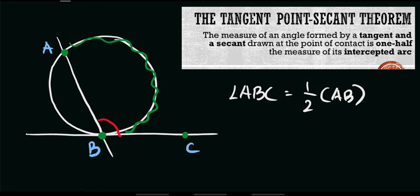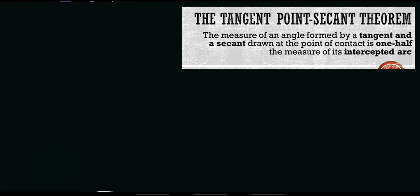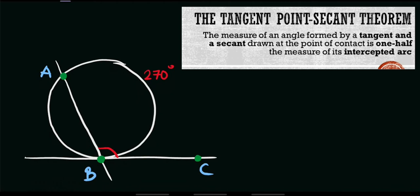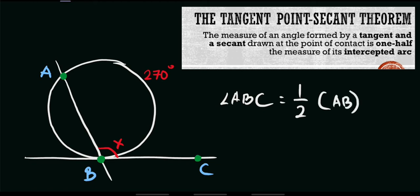Let's try to solve some problems that involve this theorem. For example, with this given figure, we are asked to solve for this given angle. Let's name this one as angle X, or simply the value of angle ABC. If the value of angle ABC is unknown and the value of arc AB is 270 degrees, we will use the same formula: angle ABC equals half of its intercepted arc, which is arc AB.